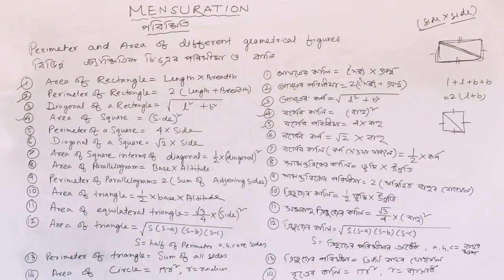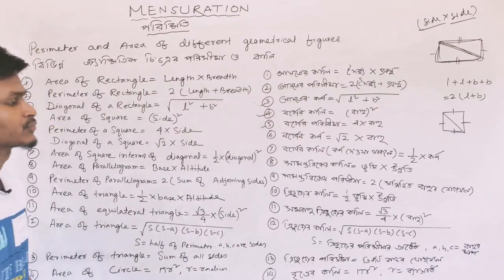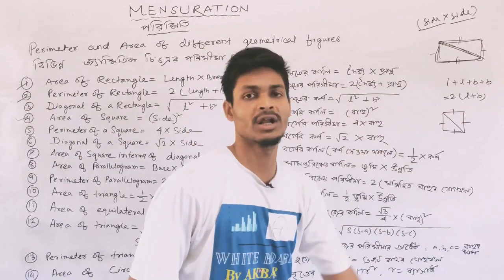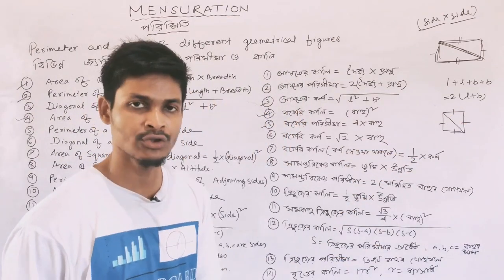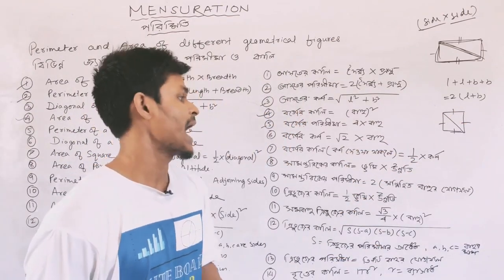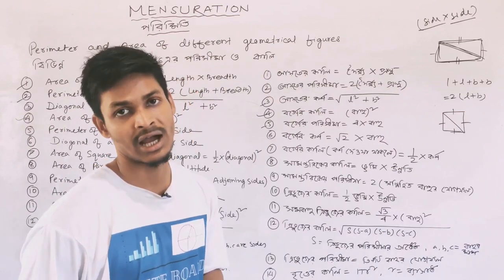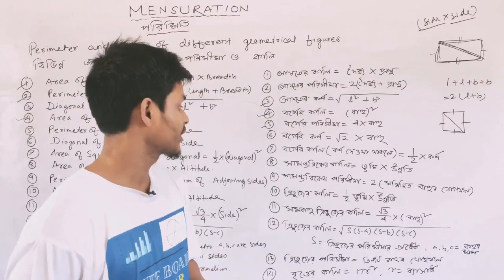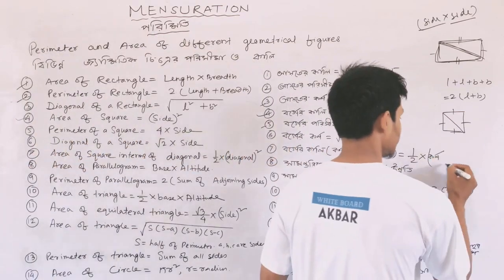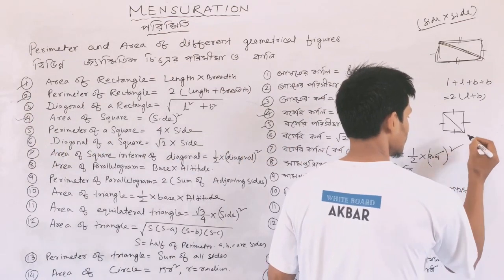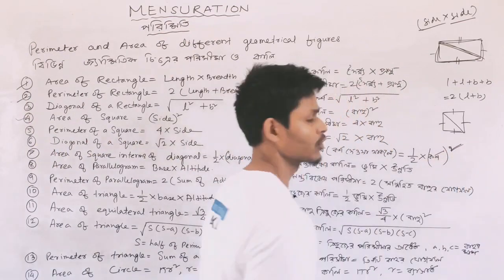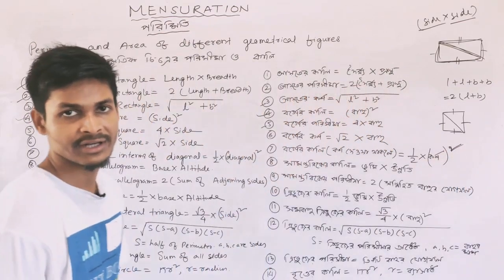Next, area of square in terms of diagonal. The area of a square using its diagonal is half into diagonal squared. So the formula is: area = half × diagonal².